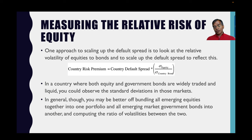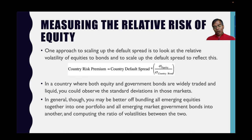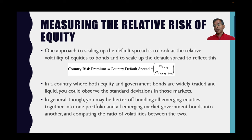There are a few countries in this data set that don't have a rating or a sovereign CDS spread — they're frontier markets like Syria, Sudan, and North Korea. For those countries, I cheat: I look up a score called the Political Risk Service score for that country, find other countries with similar scores that do have ratings and equity risk premiums, and report the average equity risk premium for those comparable countries as the equity risk premium for Syria or North Korea.